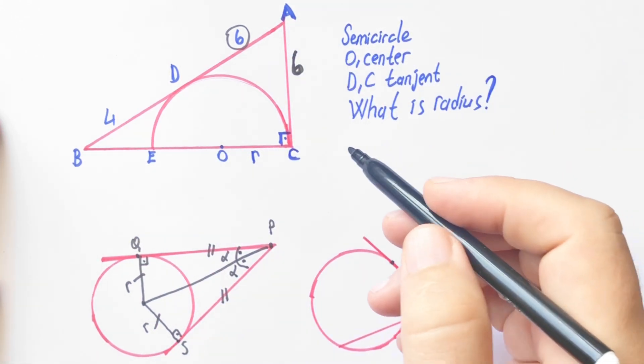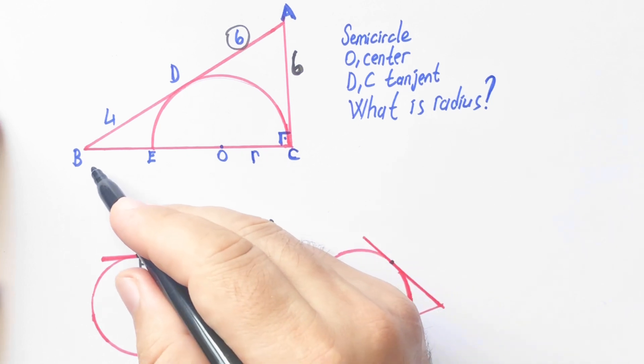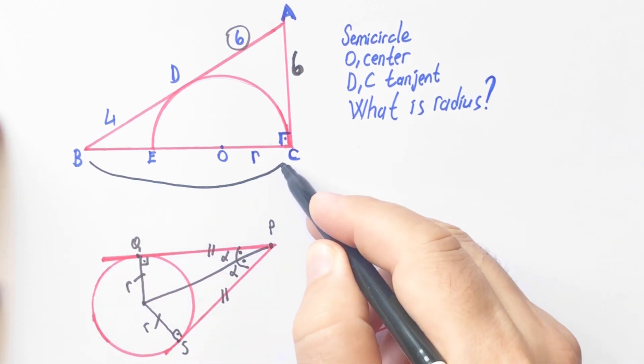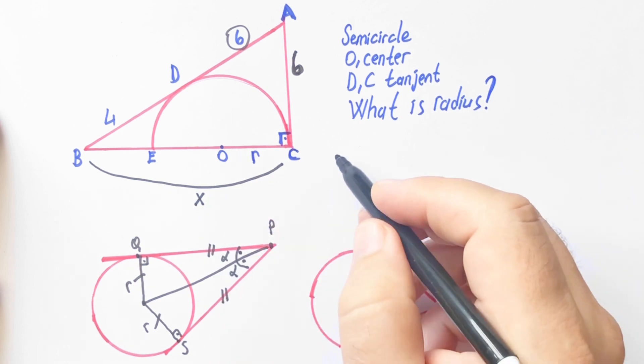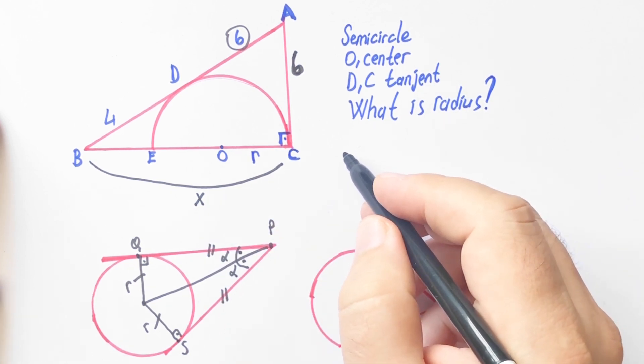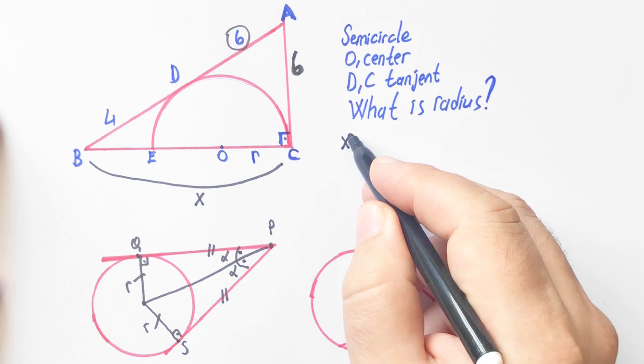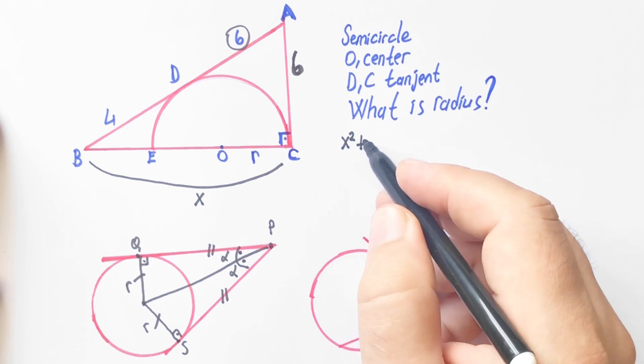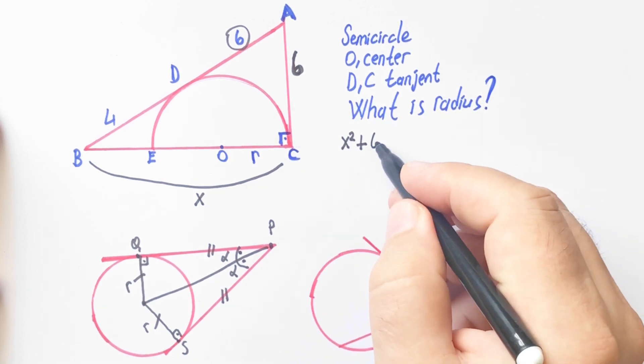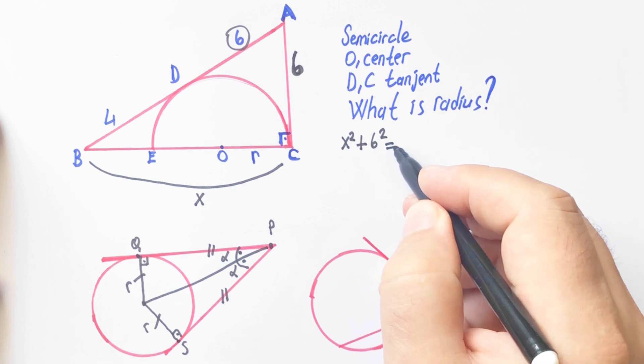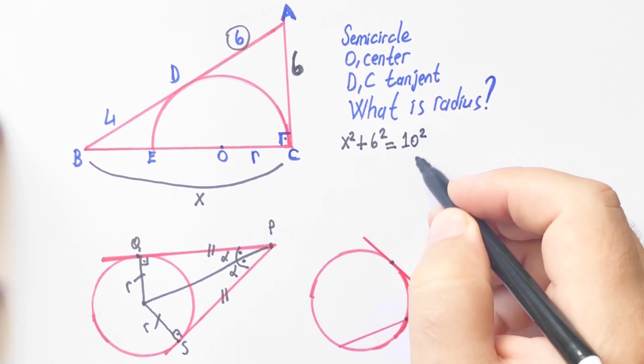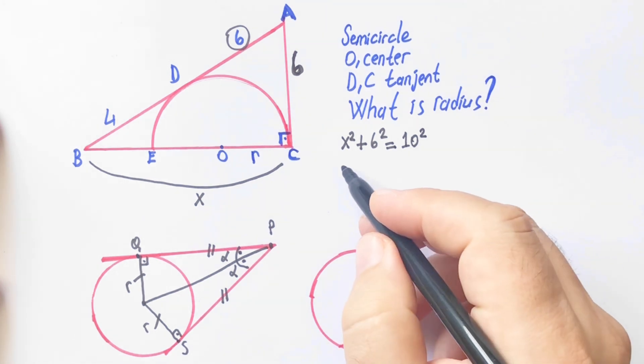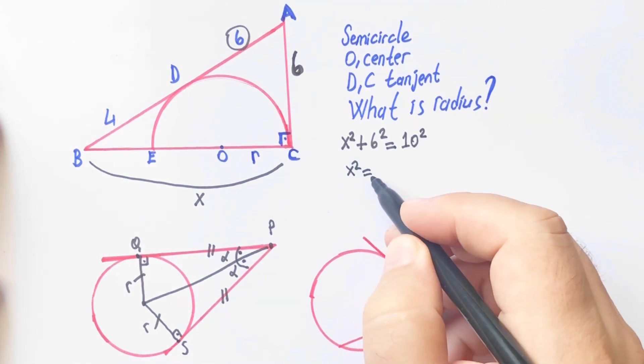If we apply the Pythagorean theorem, let's call here x. We'll write x squared plus 6 squared equal to 4 plus 6 is 10 squared. So x squared equal to 100 minus 36.